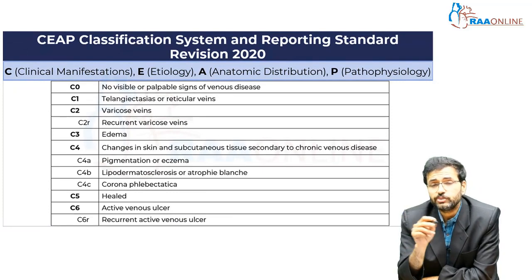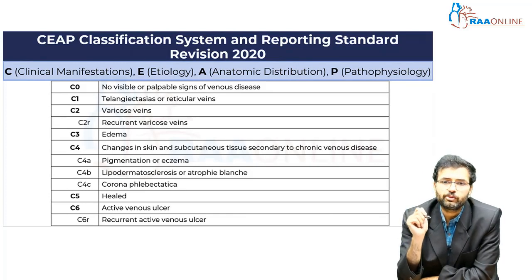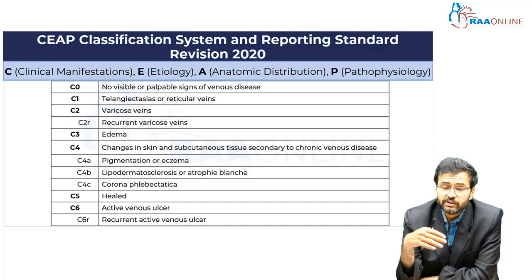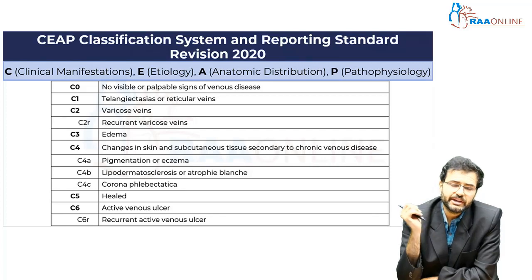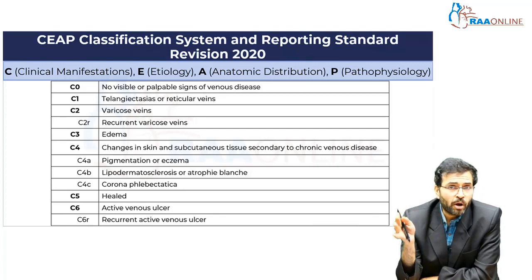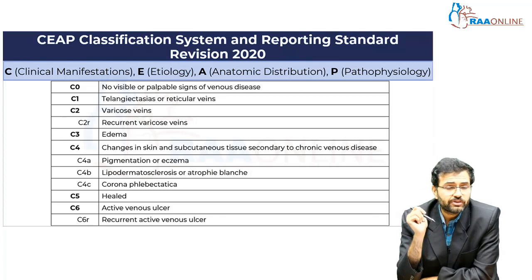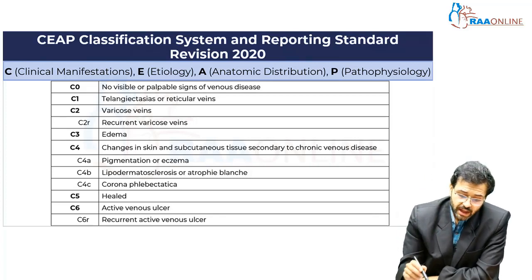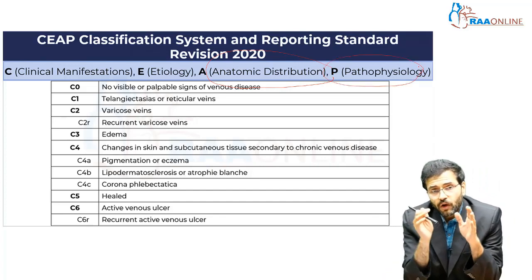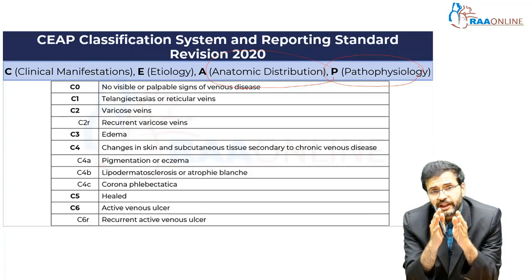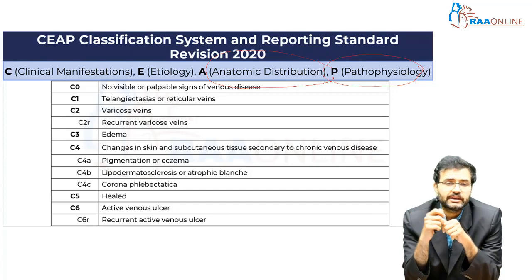The next classification system, used extensively worldwide particularly by vascular surgeons, is the CEAP classification system. It is regularly updated; the most recent revision was done in 2020. It has four important components: C stands for clinical manifestation, E for etiology, A for anatomical distribution, and P for pathophysiology. The venous disease is categorized according to each of these criteria.